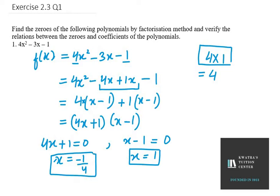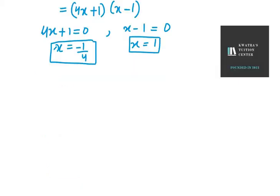So these are the two zeros from this equation. Now what we need to do next is verification. For verifying we know that we have α + β and α·β. Let α be minus 1 by 4 and β be 1.